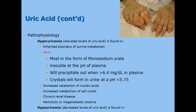Here is a picture of gout — this person has uric acid crystals deposited in their joints, and this case got quite severe. Hyperuricemia is the elevated level of uric acid that can lead to gout. The most common form of crystals in those joints is monosodium urate crystals, which form because they're insoluble at the pH of plasma. If you have more than 6.4 milligrams per deciliter of uric acid, that's when gout issues begin. Crystals can also form in urine at a low pH. Hyperuricemia is increased by increased metabolism of nucleic acids, high cell turnover, renal disease, and megaloblastic anemia.